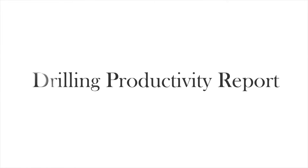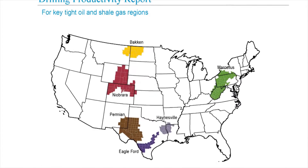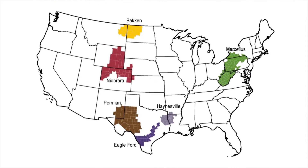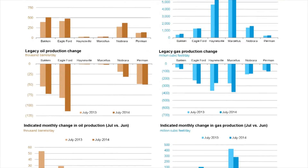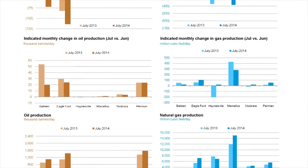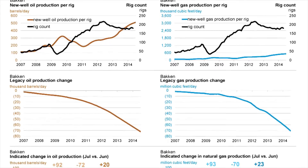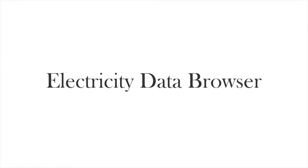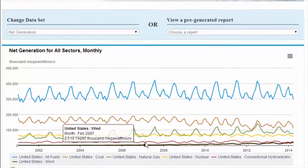EIA spent almost a year researching and developing a new methodology to forecast drilling activity from six tight shale formations — the formations responsible for the recent dramatic increases in US oil and gas production. The result was the Drilling Productivity Report, or DPR. EIA issued the first DPR in October 2013, and since then the detailed monthly report has received high praise from industry participants and analysts.